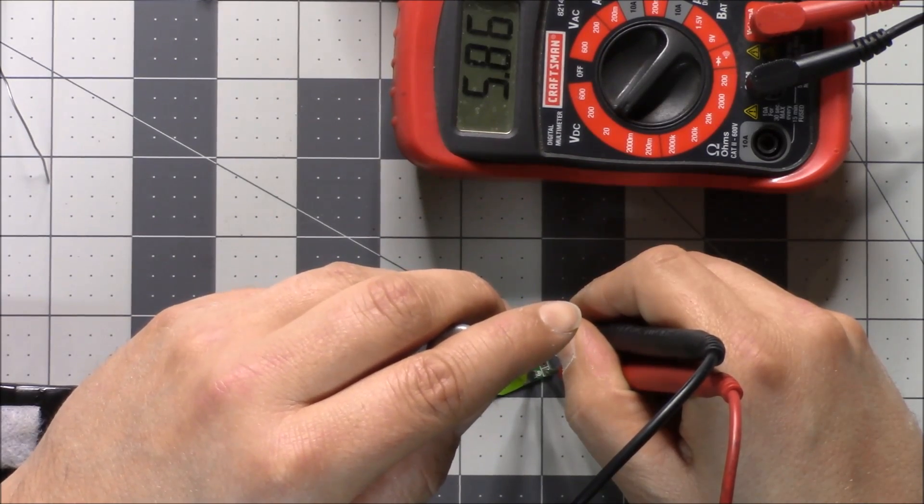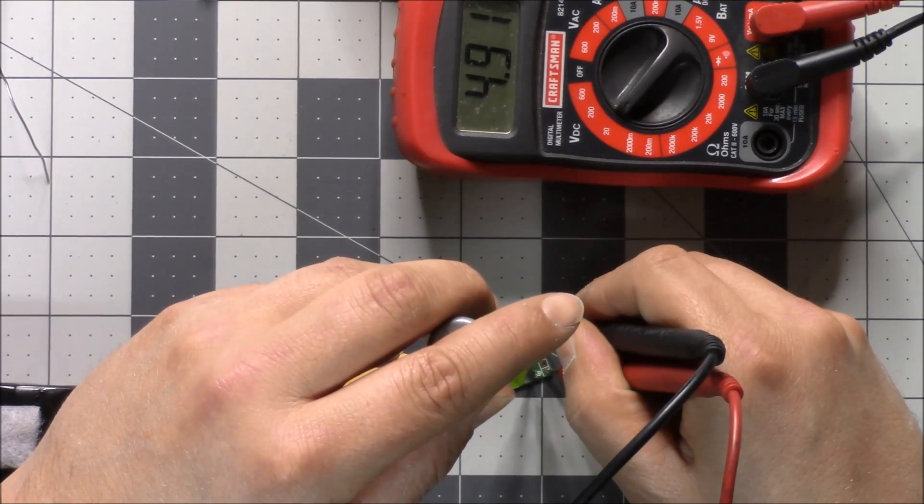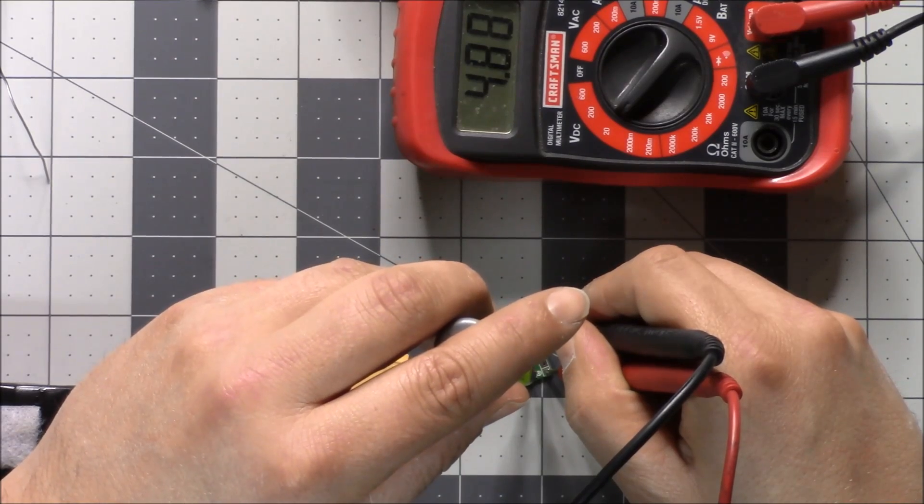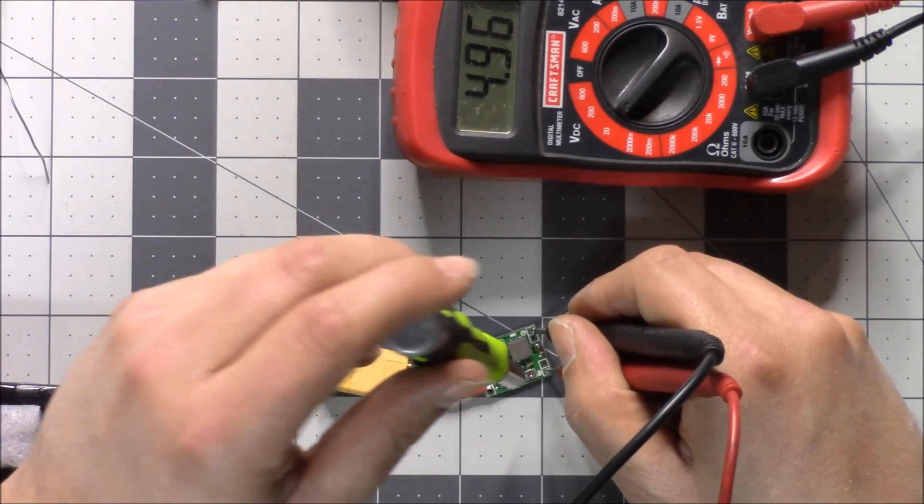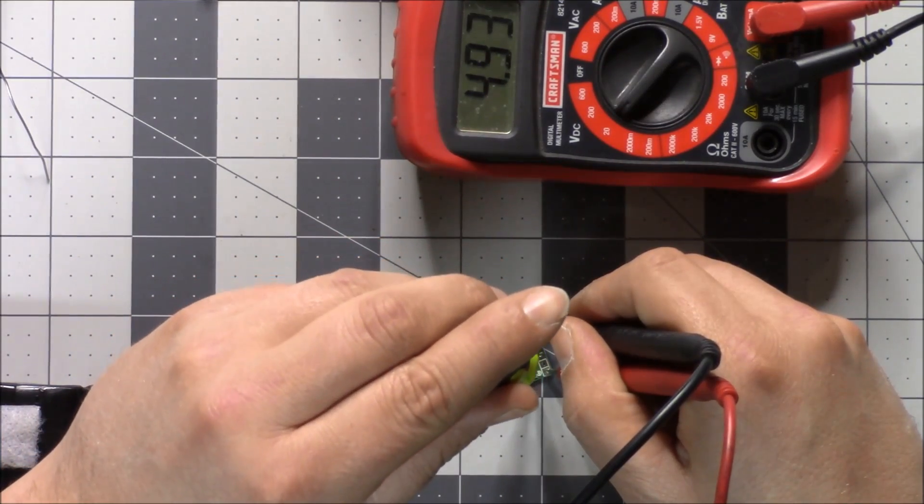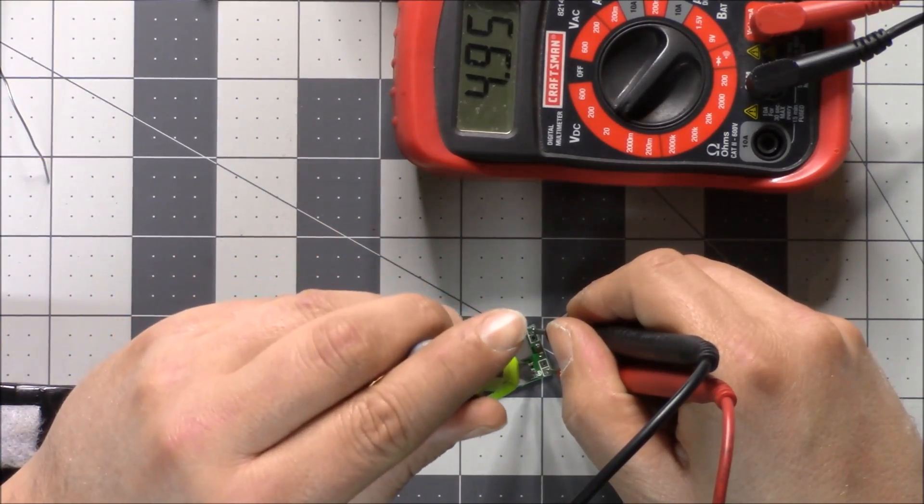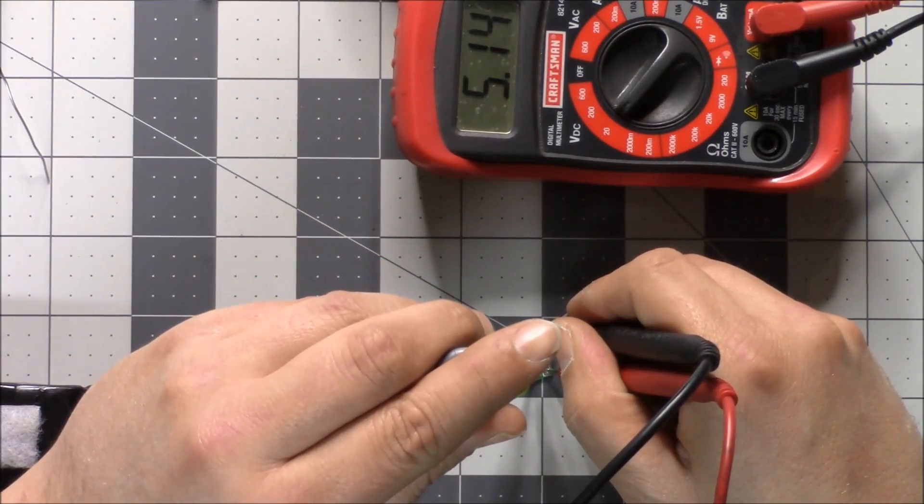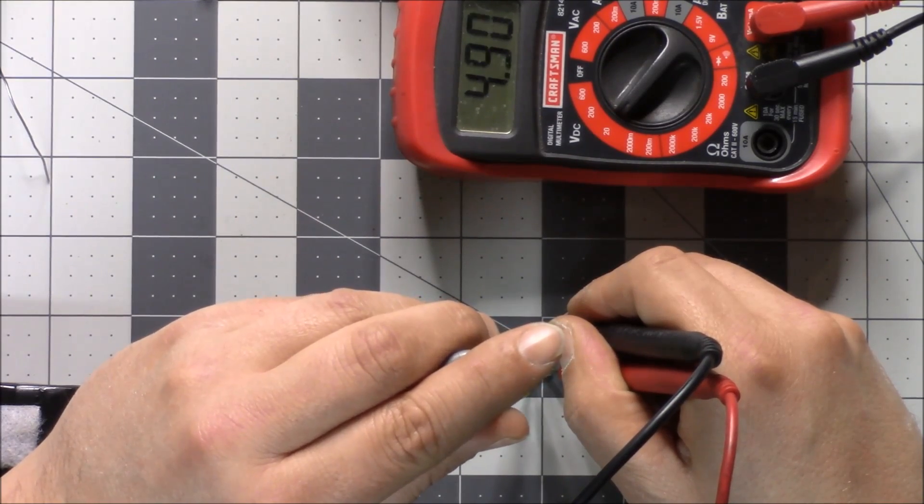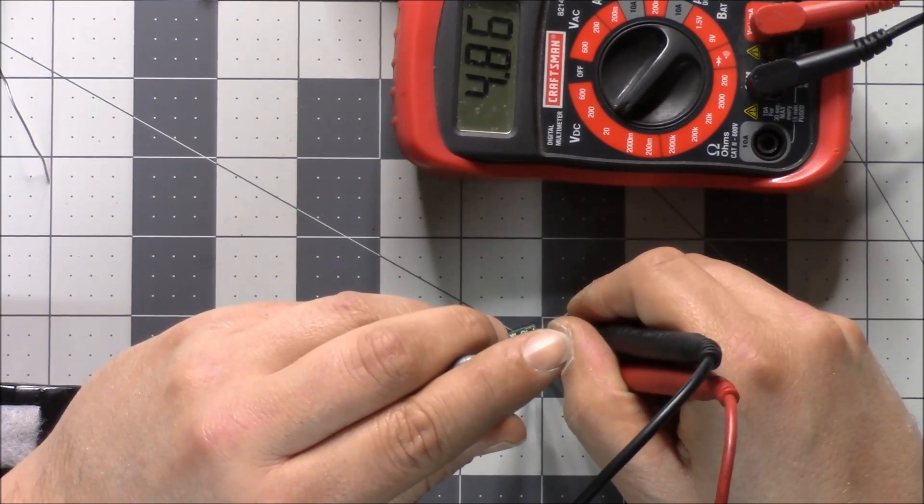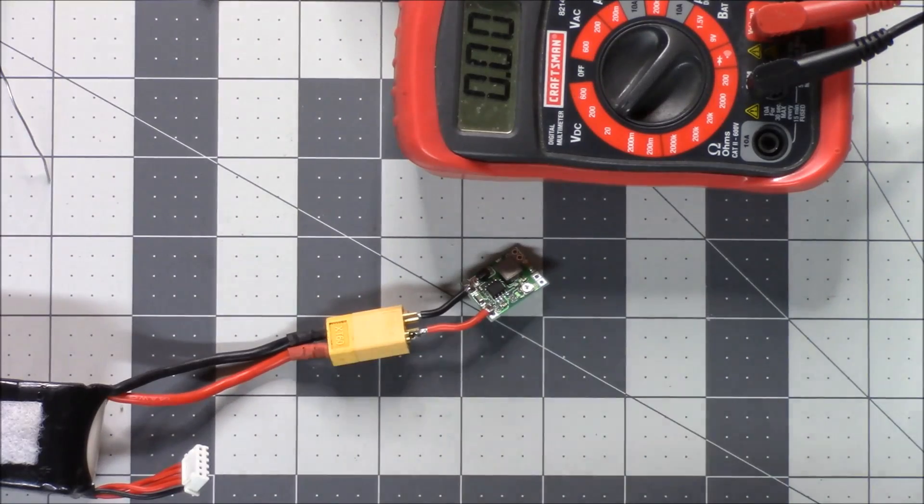It's currently set at 10.17 volts. There is a potentiometer here that I'm going to dial in and I'm going to dial it back to 4.8 volts so that we're within the threshold that the TBS likes. I think it's four and a half to five and a half volts is the input. Four point nine, that works okay.